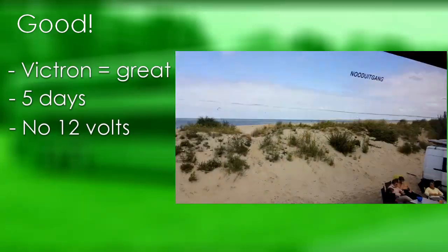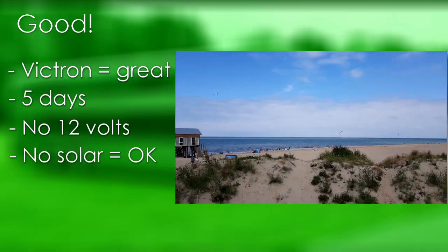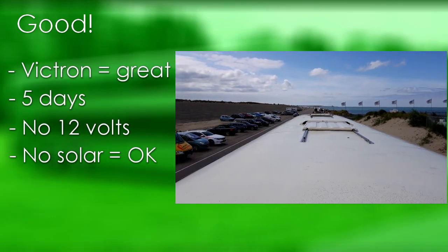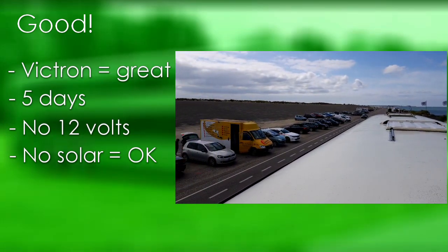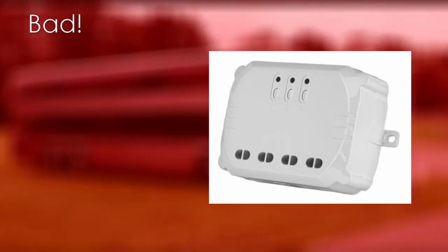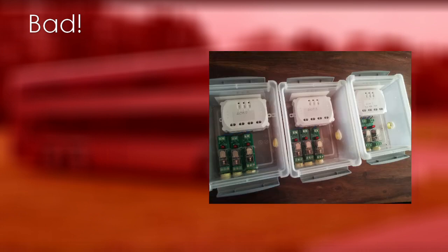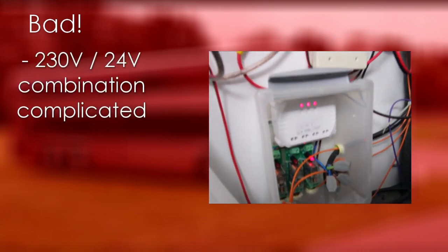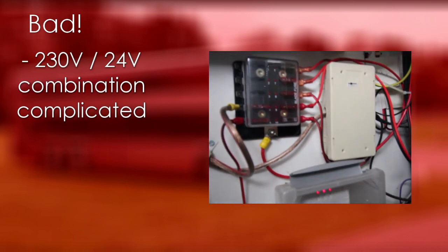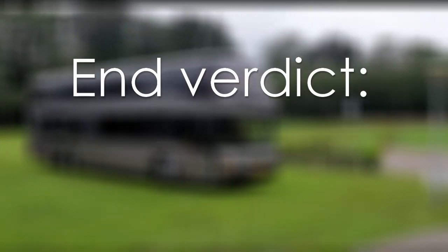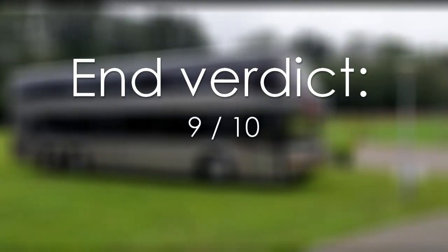We never missed any solar panels - we drive from socket to socket and never had to use the generator. I could have left the generator out completely, but I couldn't have known that up front and it is good to know it is there. The wireless receiver runs on 230 volts and the LEDs on 24 volts, so that forced a 24-volt/230-volt combination - reliable but a bit unnecessarily complicated. The Home Wizard is a nice gadget but is seldom used in reality. Verdict: happy - a 9.